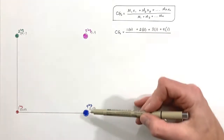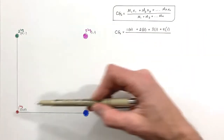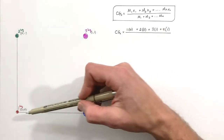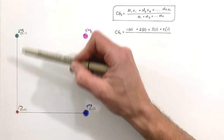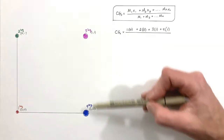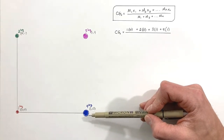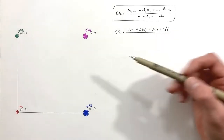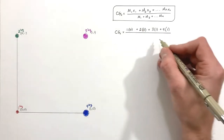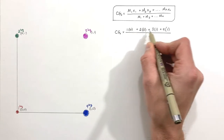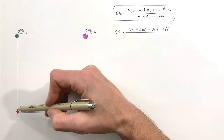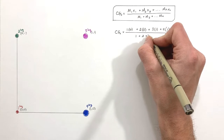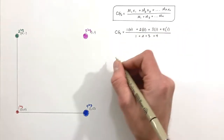Each of these particles, even though drawn as different sizes, are all point masses — we're not worrying about the distribution of mass within each particle. They are infinitely small point masses. For the denominator, we've got one, two, three, and four kilograms, so that's one plus two plus three plus four — the total mass of our assembly.